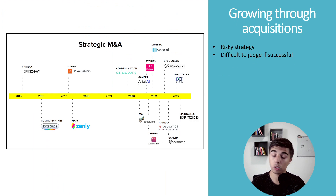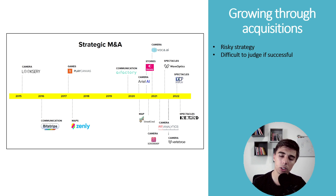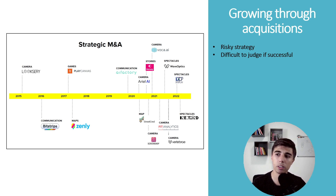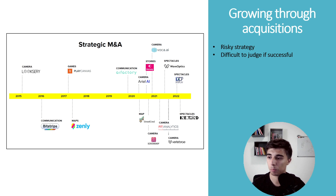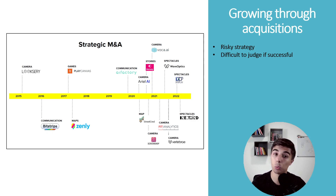Another option apart from organic growth is to grow through acquisitions and bring new features to existing users. This is a somewhat riskier strategy, but it can work. Historically in the last seven years, Snap has done a number of acquisitions, but it's very difficult to judge if they were successful because they're incorporated directly into the Snapchat application. We have no idea how many added value, added synergies, and how many just didn't. This is a bit of a black box when going through the reports.